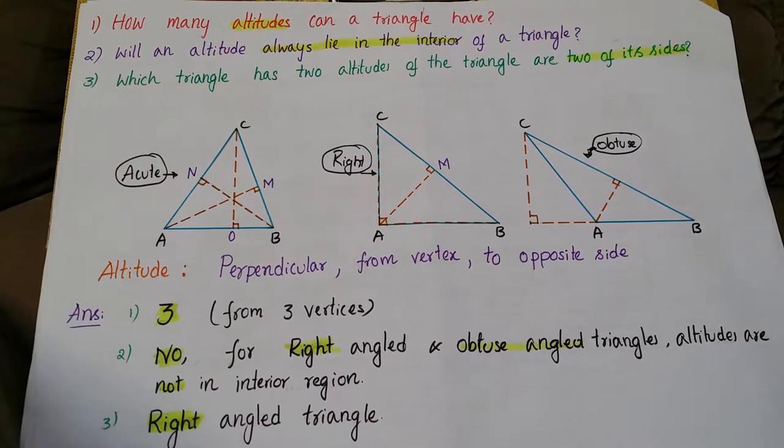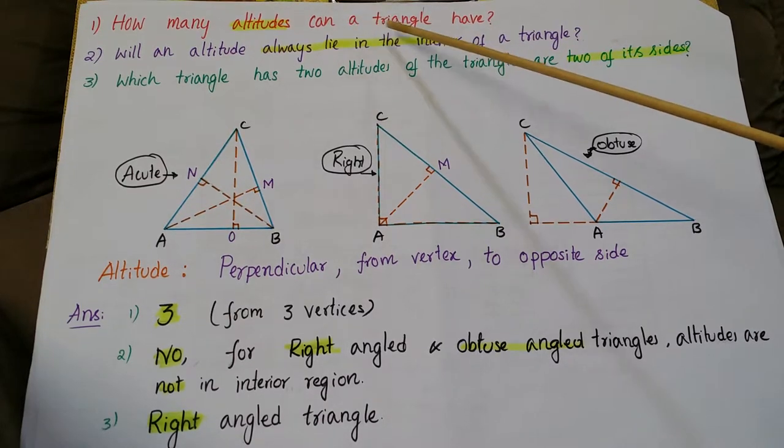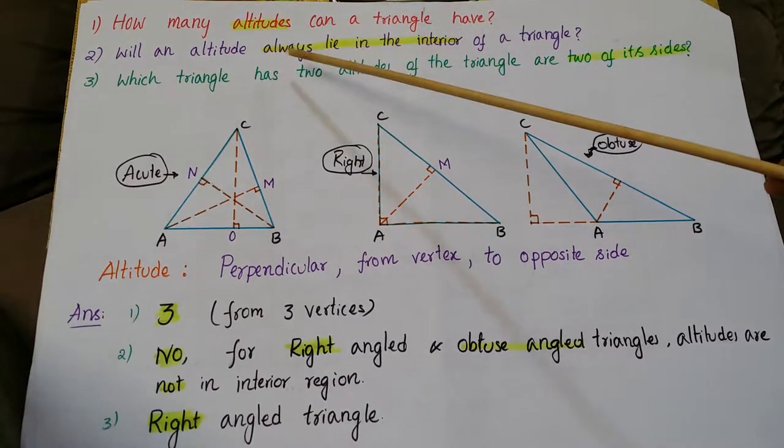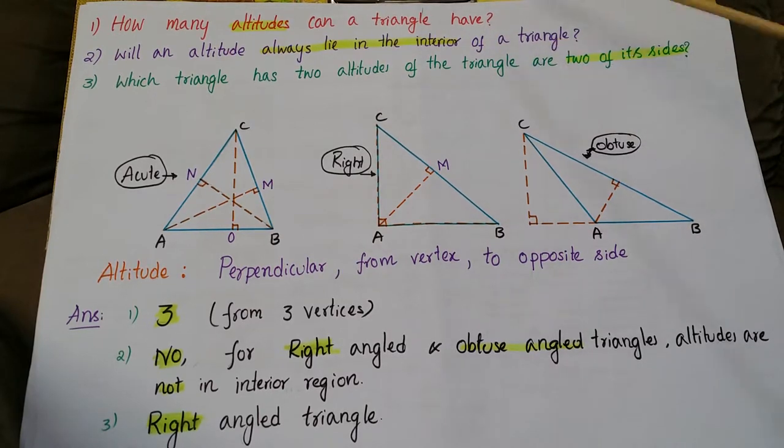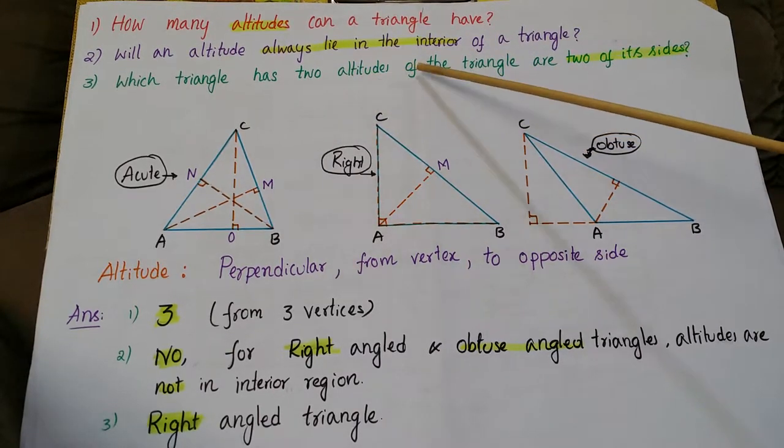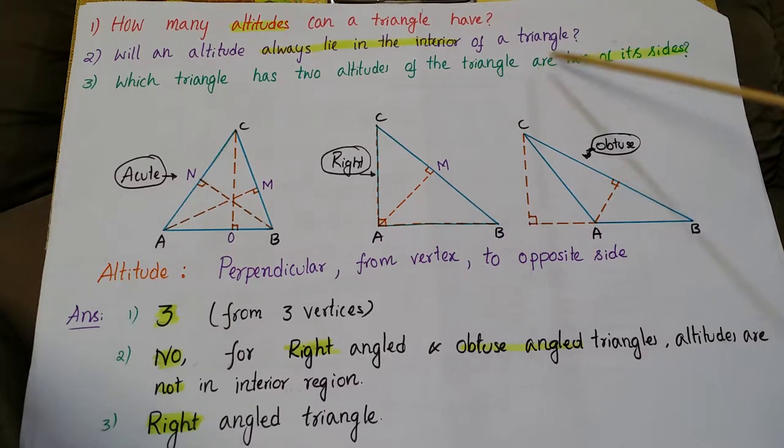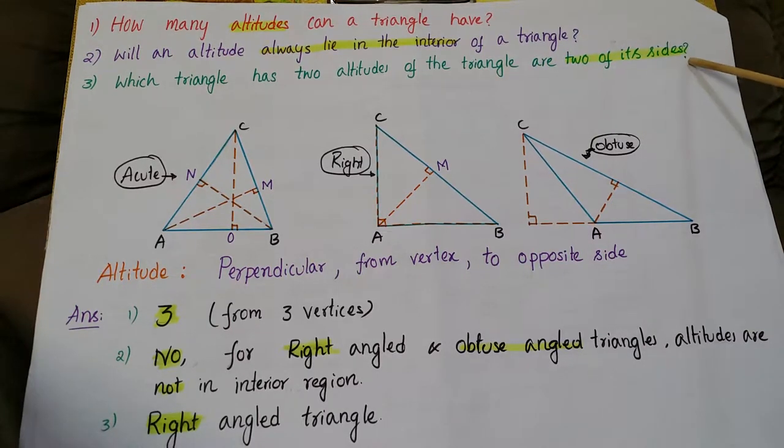Now I am going to tell the answers for these questions. How many altitudes can a triangle have? Will an altitude always lie in the interior of a triangle? Which triangle has two altitudes of the triangle are two of its sides?